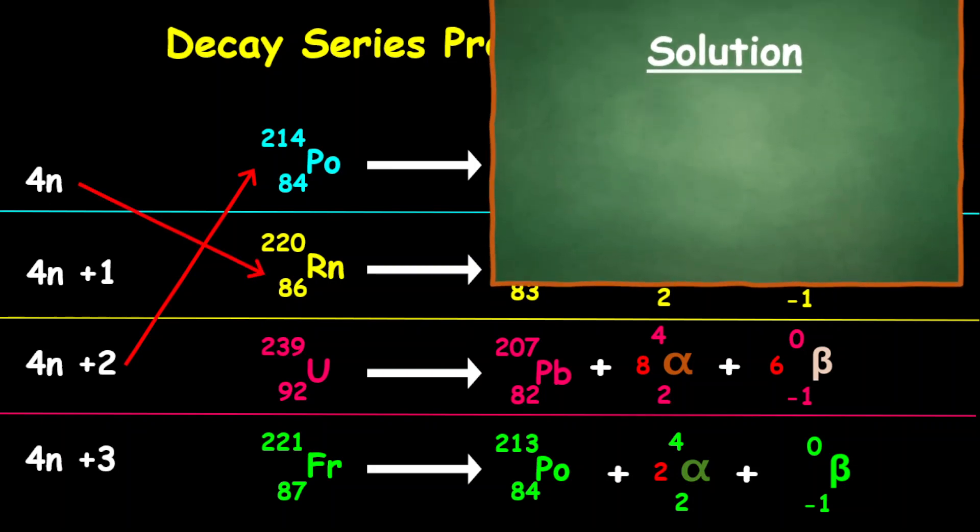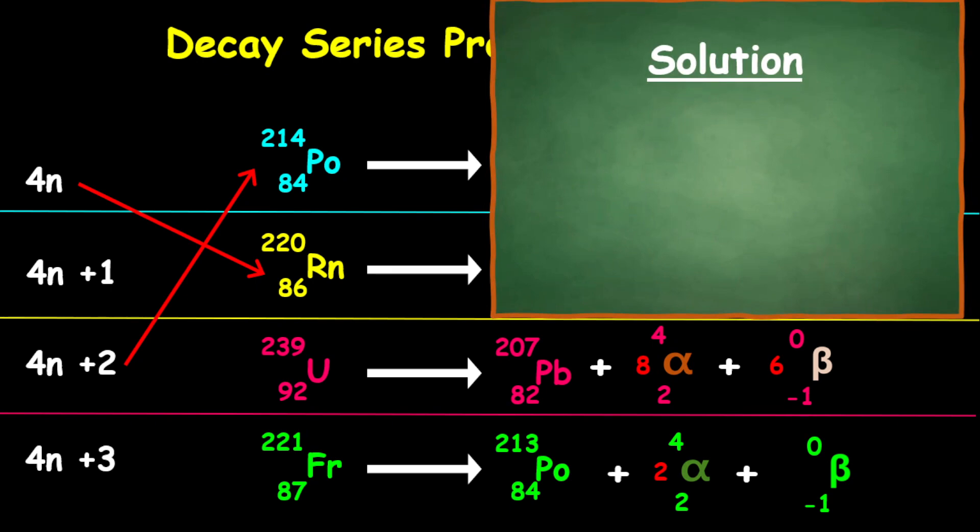For the third equation here, let's take the mass 207 divided by 4. What we get is 51.75, and remember 0.75 is three remainder. So therefore, we're going to match that up to say it is a 4n plus 3 series.